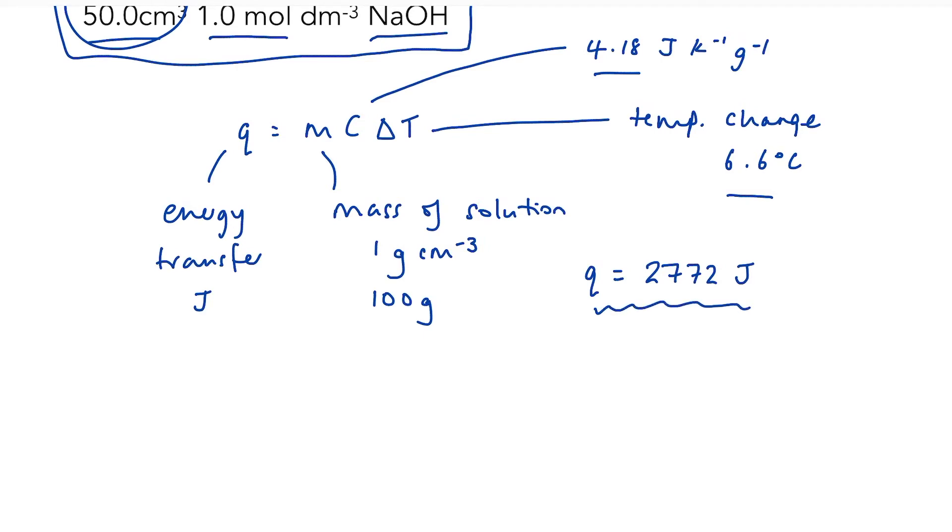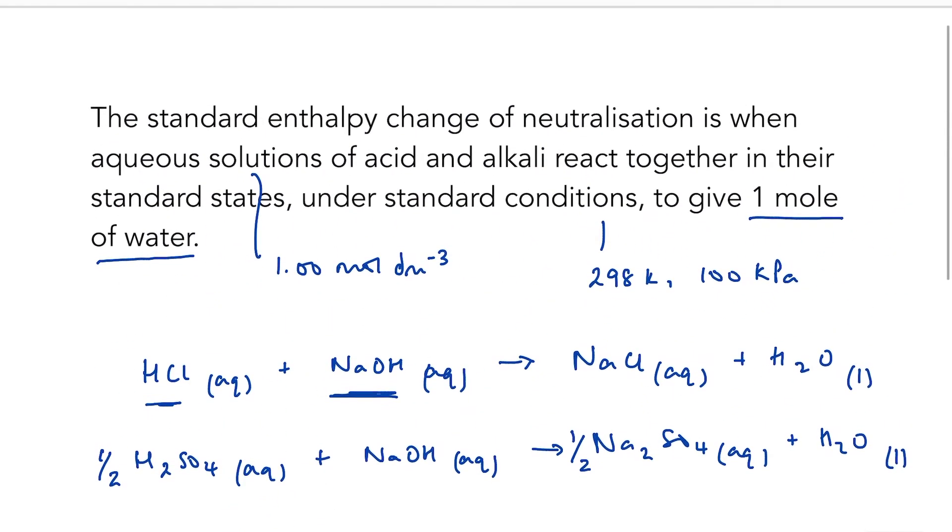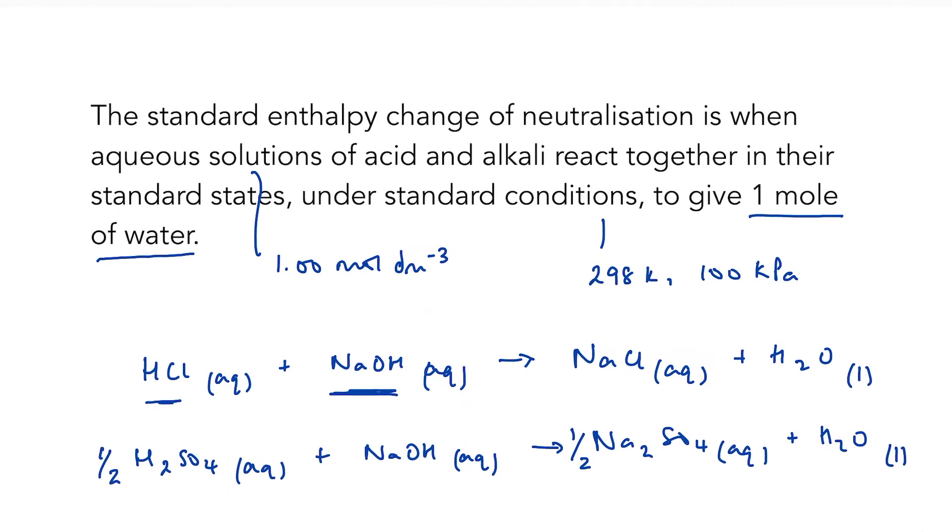If we go back to our definition for neutralisation, it's to give one mole of water. Well, if I have a look at my equation, I can see that water, acid, alkali, they are reacting in a one to one ratio in terms of moles. So if I know how many moles of HCl I've got, I will also know how many moles of water I had, or alkali. Either would work.